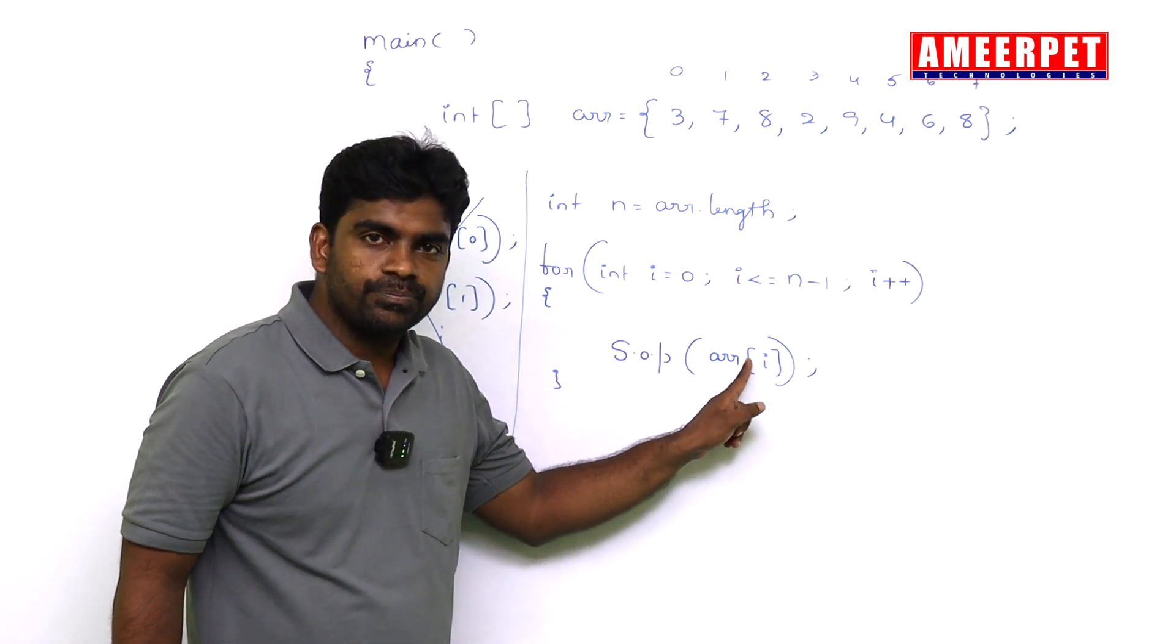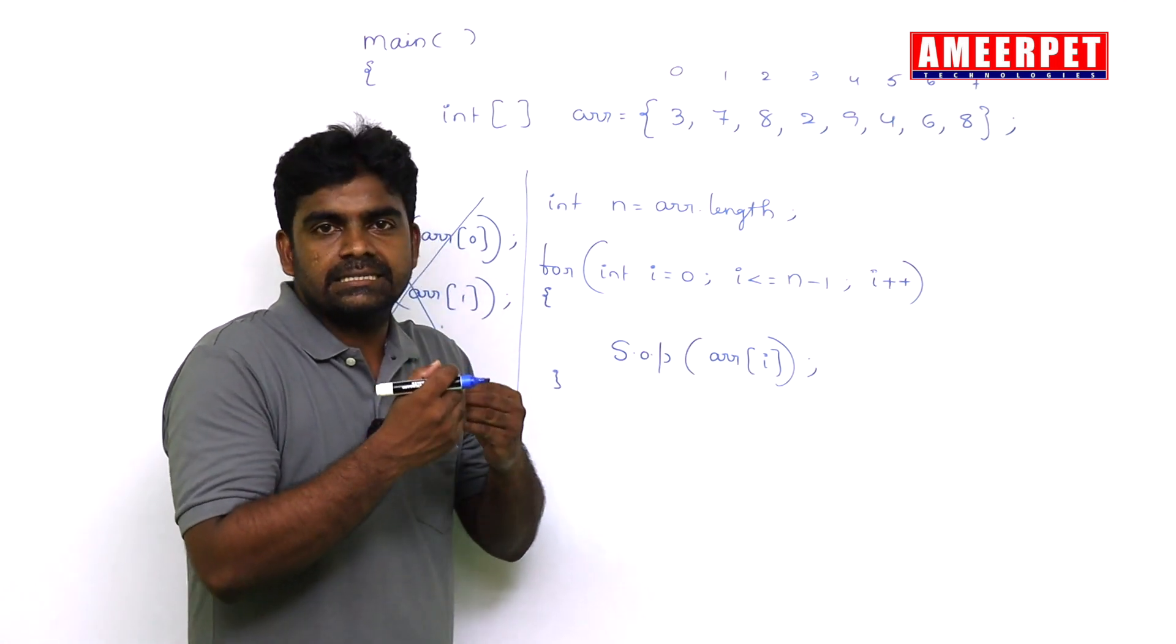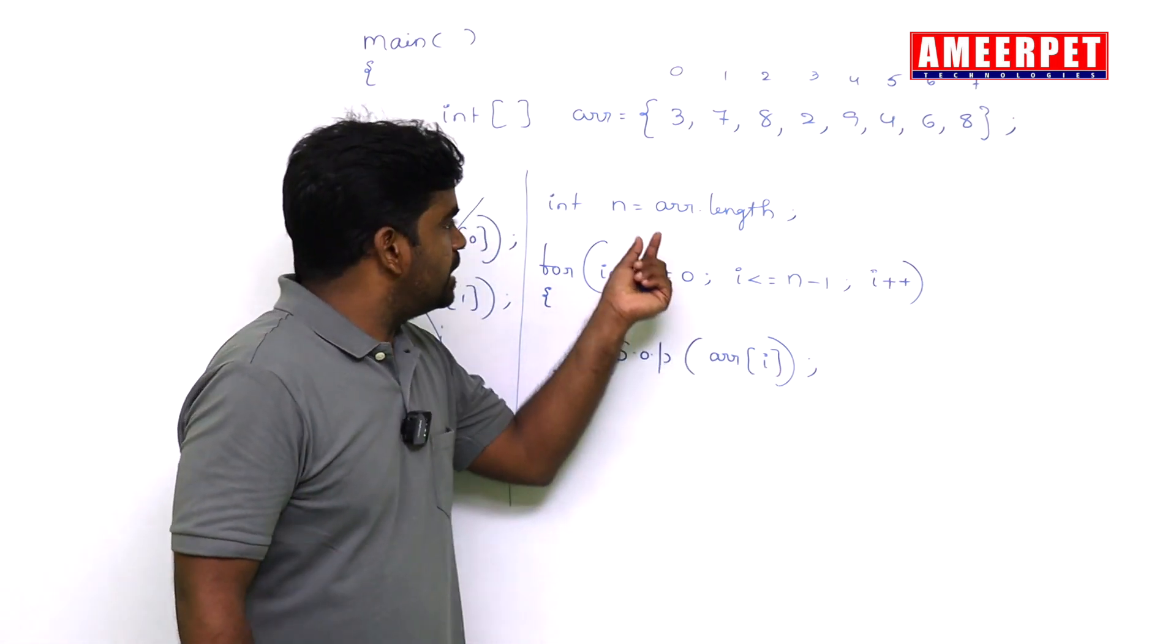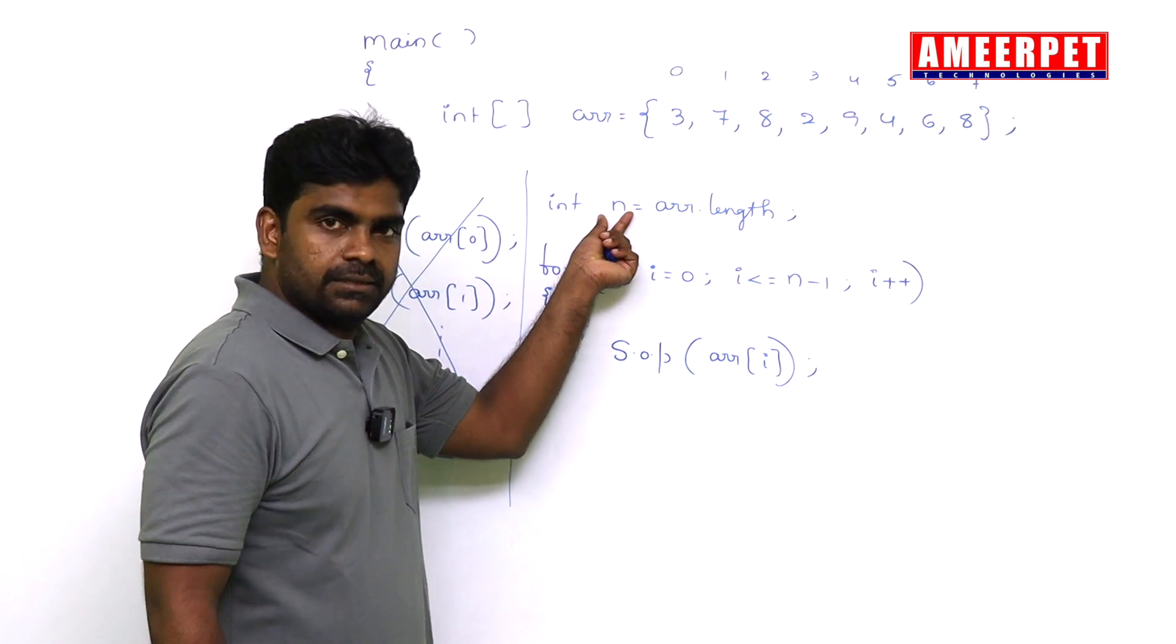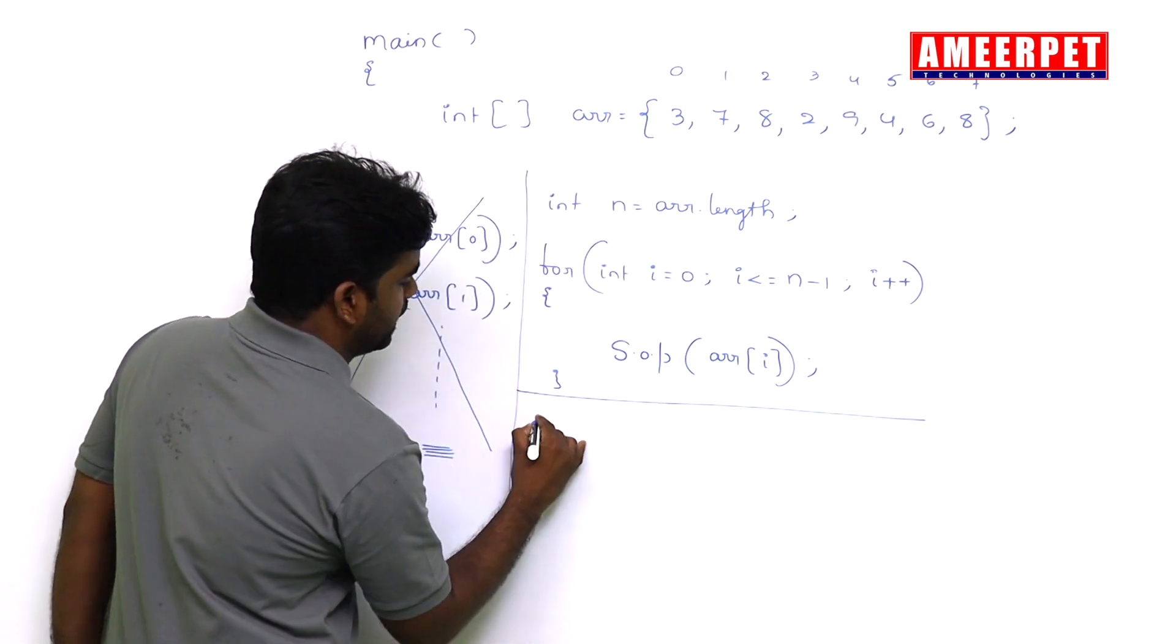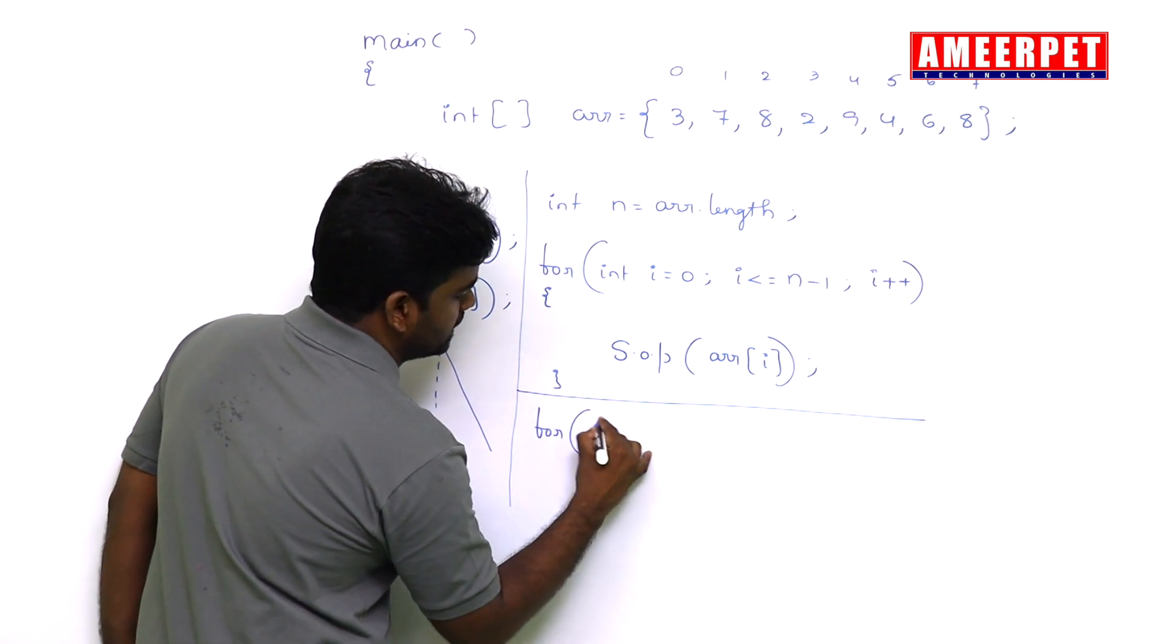So it keeps on increasing the i value, so each location value it is printing. Sir, I don't want to use n. So directly you can use the for loop instead of writing this.